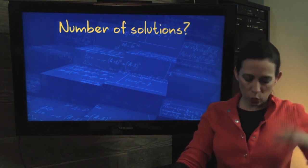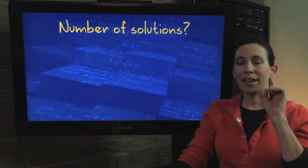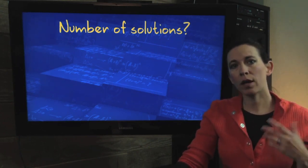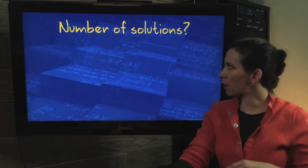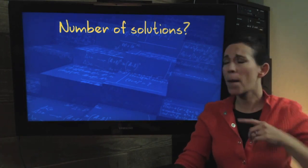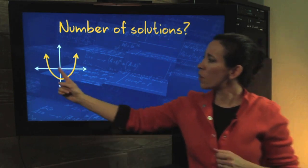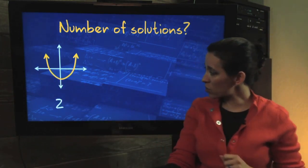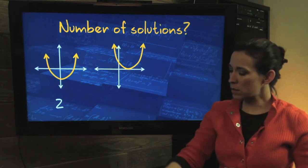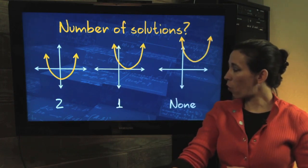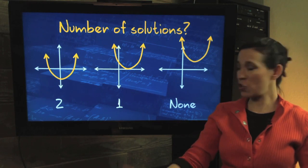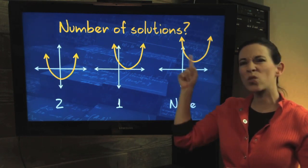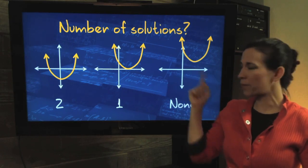Number of solutions, we'll just go over this real quick. It depends on what's underneath that square root, but it's all based on the graph. You're looking for your x-intercepts. So you can either have two solutions, one solution, or no solution. No real solution, because there are no x-intercepts. This is where your complex answers would come in.